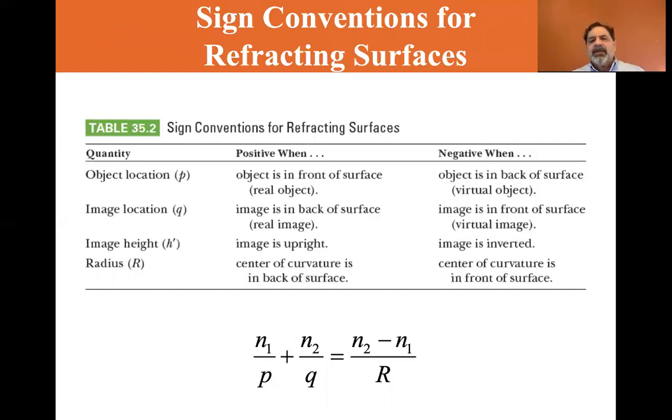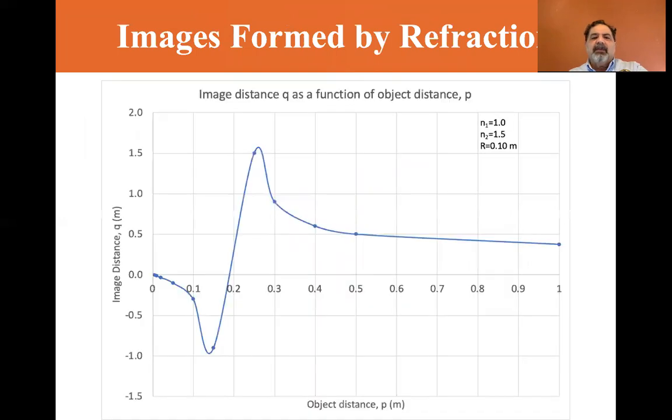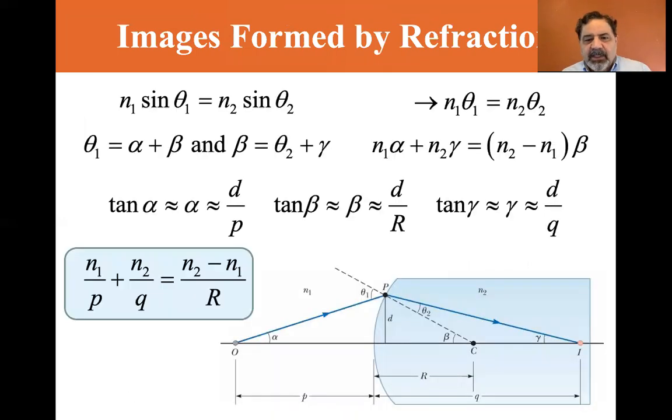When they're negative, when the object is in back of the surface, virtual object, images in front of the surface, virtual image, images inverted, and the center of curvature is in the front of the surface. So that would actually kind of be a concave piece of glass, kind of a bowl. And that's the equation N1 over P plus N2 over Q equals N2 minus N1 over R. That's the equation that I use, solving for Q, to come up with this graph that I came up with here.